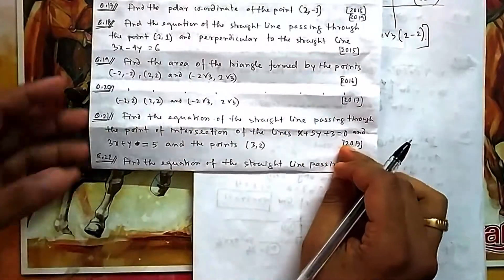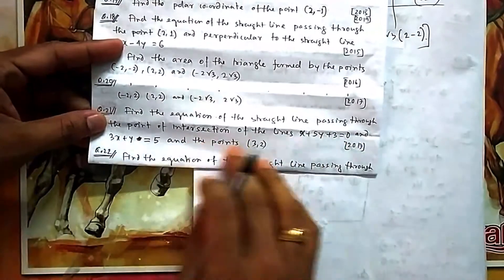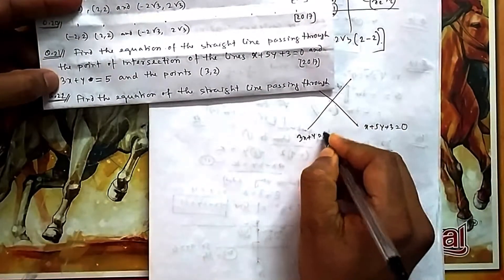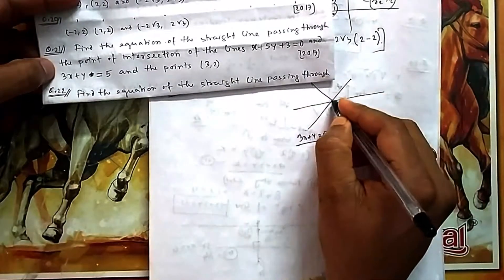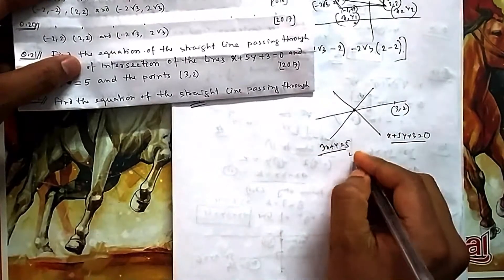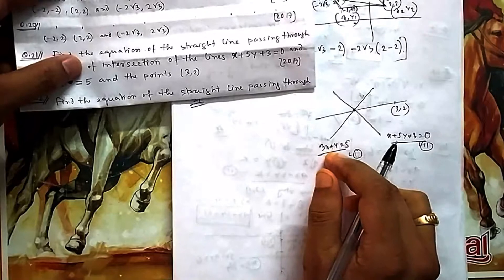Question 21: find the equation of the line passing through the point of intersection of two given lines and through a given point. So if I draw it, two lines are given — one line is x + 5y + 3 = 0. I am not drawing exactly because it is not necessary; you just need to have the feeling. So these two lines are given, and a line which passes through their intersection — you have to find the equation of the line which passes through the intersection of these two lines and the point (3,2). You know how to write the equation of a line passing through the intersection of lines L1 and L2: it is L1 + k·L2 = 0.